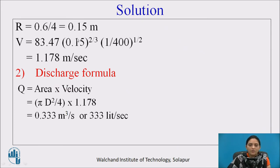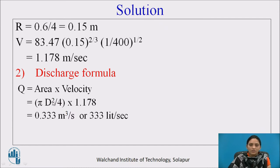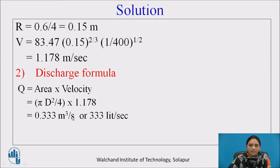Calculate R: d/4 = 0.6/4 = 0.15 meters. Substituting R and S into the velocity formula gives V equal to 1.178 meters per second. For discharge, Q = area × velocity. Since the sewer runs full, use the full area πd²/4 multiplied by the velocity 1.178, giving discharge equal to 0.333 cubic meters per second, or 333 liters per second.